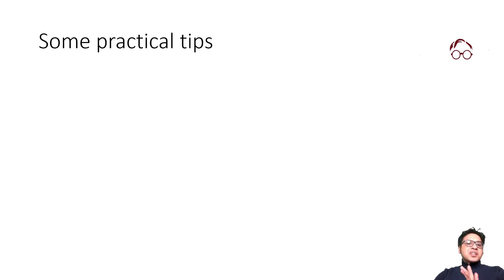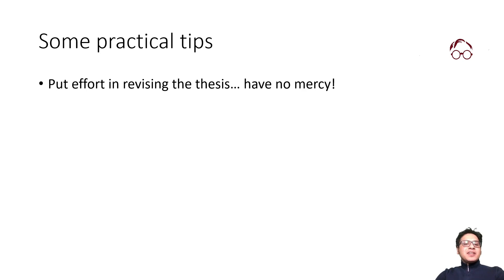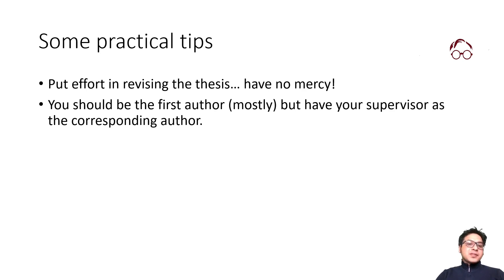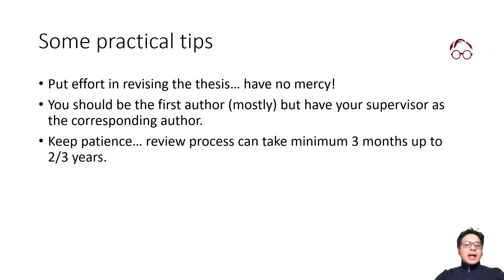Here are some practical tips. First, put effort into revising the thesis and have no mercy — when converting from a twenty thousand word thesis to a seven to eight thousand word article, remove everything that is irrelevant and keep only the most important content. Normally you should be the first author, and always add your supervisor as the second author and corresponding author. If you have multiple supervisors, add both. You may also add one or two people from outside the supervisory board as co-authors.